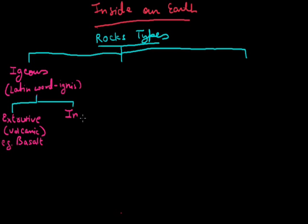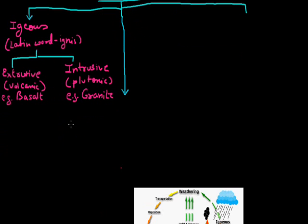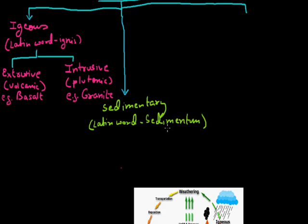Intrusive is the second type of igneous rocks, also called plutonic. Not because of volcanic eruption, but before it flows down inside the Earth. For example, we can take granite. The next one is sedimentary rocks.